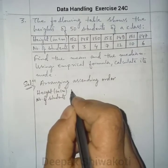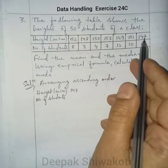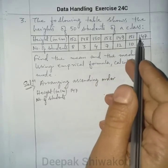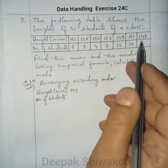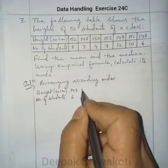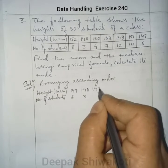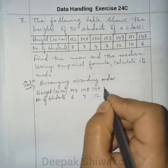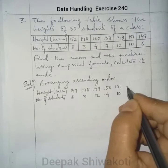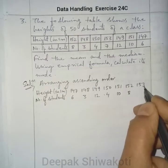Height 147 is the lowest and 153 is the highest. The number of students for each height: 147→6, 148→3, 149→12, 150→4, 151→10, 152→8, 153→7.